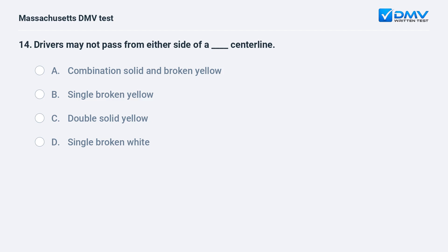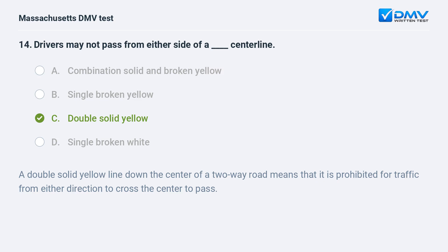Drivers may not pass from either side of a blank centerline: a. a combination solid and broken yellow. b. single broken yellow. c. double solid yellow. d. single broken white. Answer: c. double solid yellow. A double solid yellow line down the center of a two-way road means that it is prohibited for traffic from either direction to cross the center to pass.